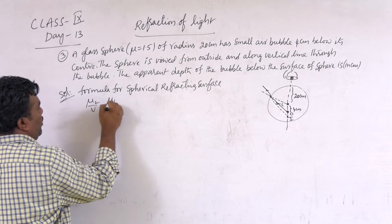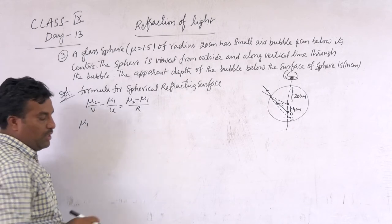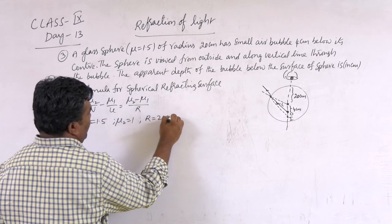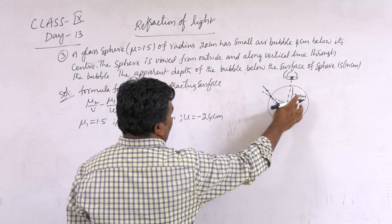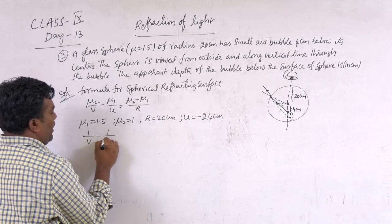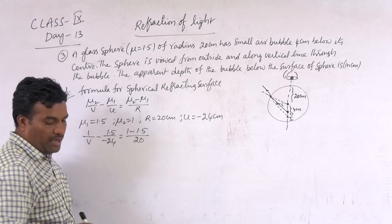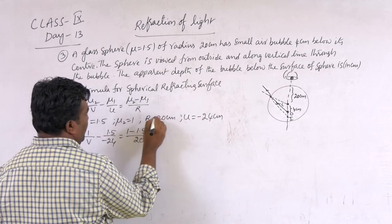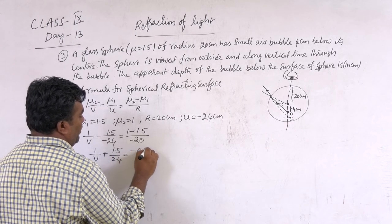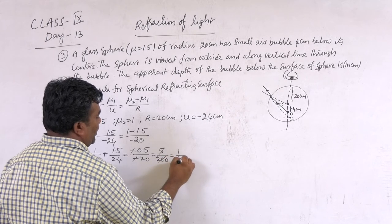Formula: μ2/V − μ1/U = (μ2 − μ1)/R. So μ1 = 1.5 (glass), μ2 = 1 (air), radius R = 20 cm, and U = −24 cm (since 20 + 4 = 24 cm). We want V. Substituting: 1/V − 1.5/(−24) = (1 − 1.5)/(−20). So 1/V + 1.5/24 = −0.5/(−20). The 0.5 cancels to give 1/40.